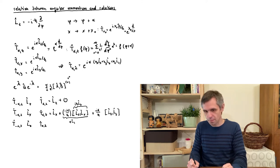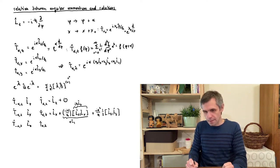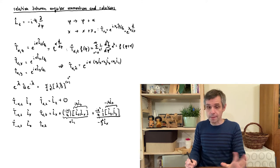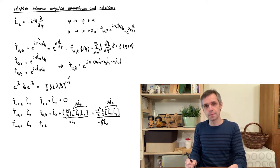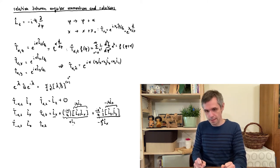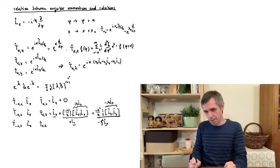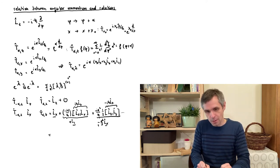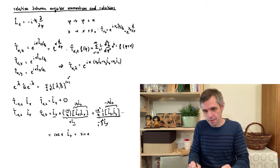That commutator is −iℏ Lx, giving a term −α²/2 · Lx. We are now back to Lx, so the next commutator produces Ly again, and the one after that produces Lx again — the terms alternate. The prefactors are powers of α over n-factorial with alternating minus signs, which are exactly the definitions of cosine and sine. So what we obtain is cosine(α)·Lx + sine(α)·Ly.